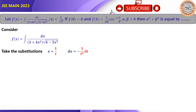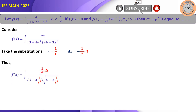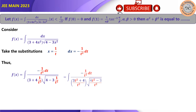Differentiating x = 1/t gives dx = −(1/t²) dt, which means f(x) becomes an integral where dx is replaced by −(1/t²) dt and (3 + 4x²) is replaced accordingly. After calculating, we get (3t² + 4)/t² multiplied by (4t² − 3)/t² in the denominator.